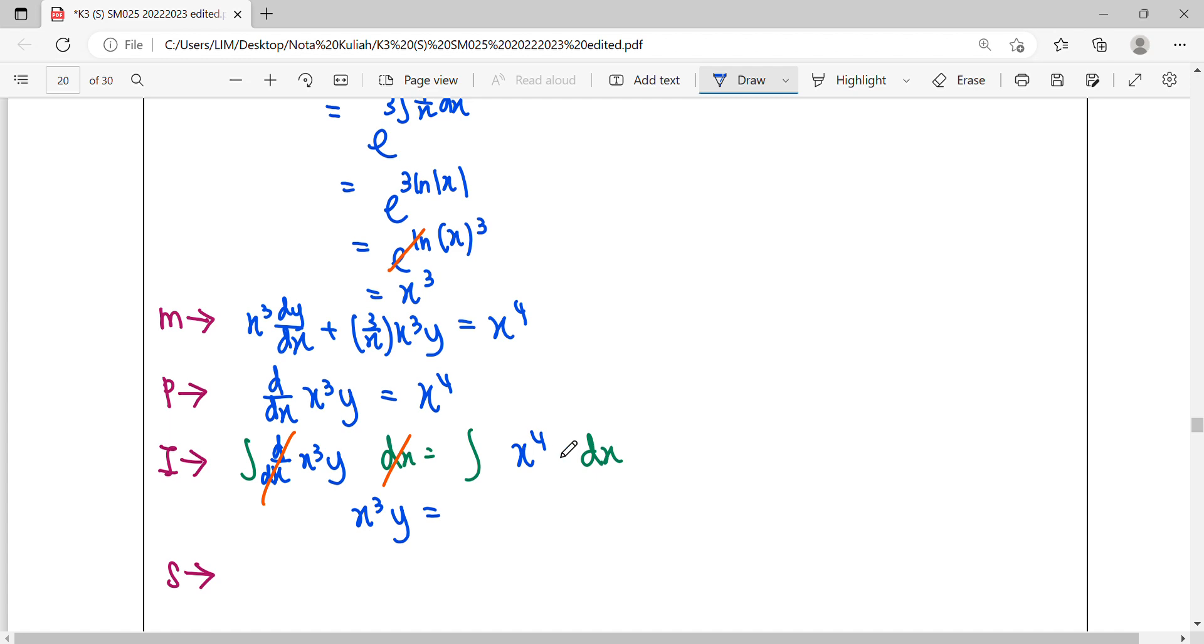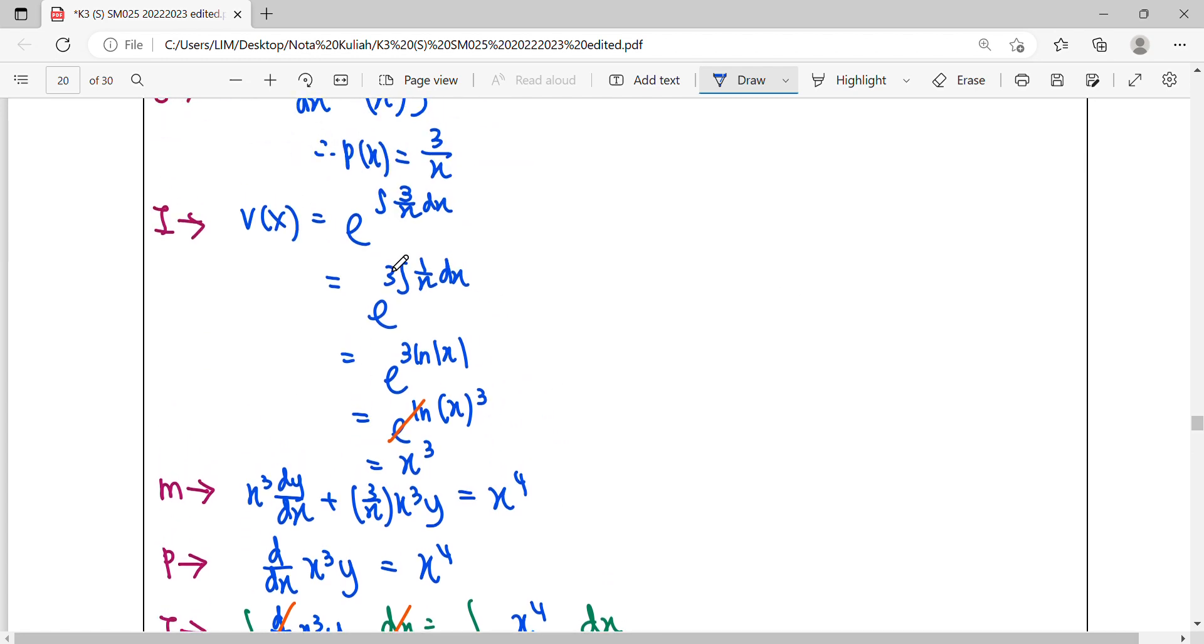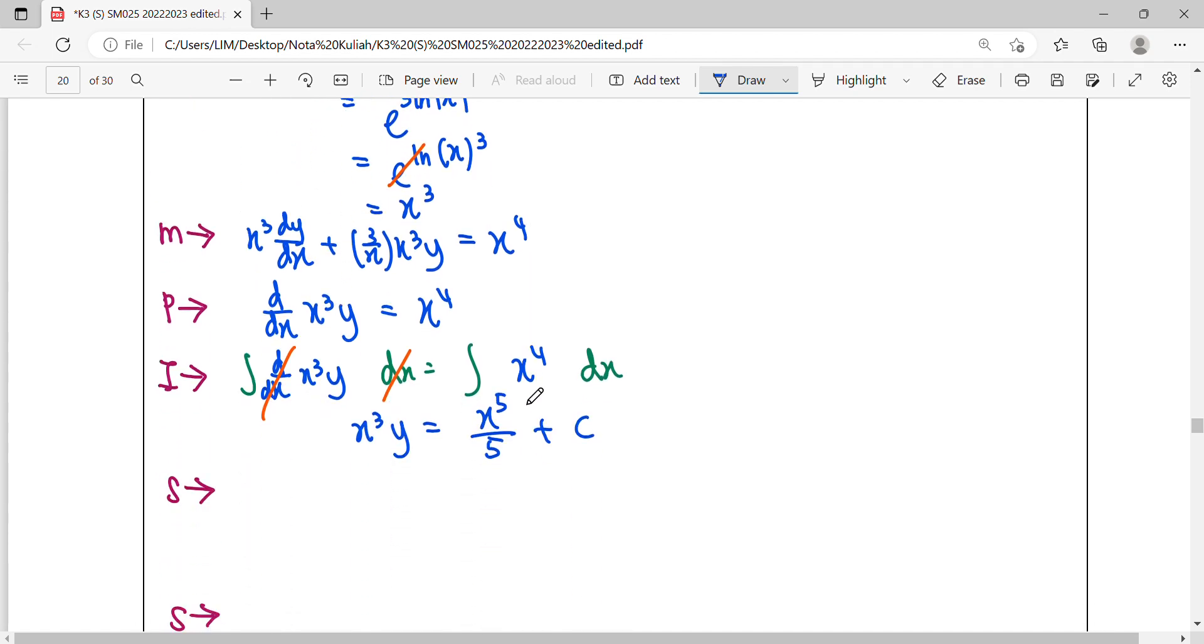For the right side, integrate x⁴ using the power rule: power plus 1 over new power, giving x⁵/5 + c. We don't add c when finding the integrating factor, only after integrating both sides.